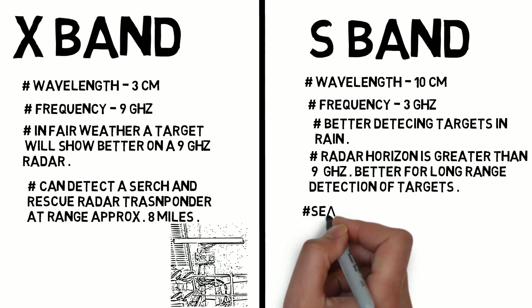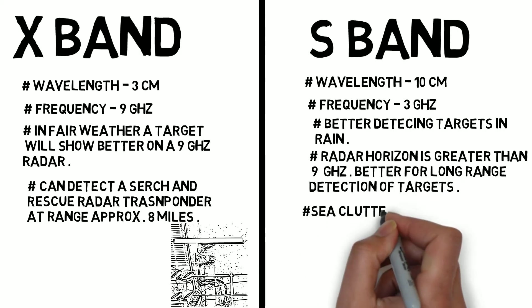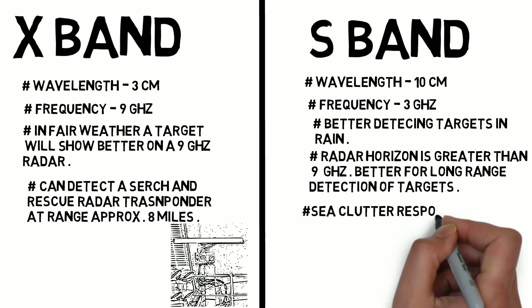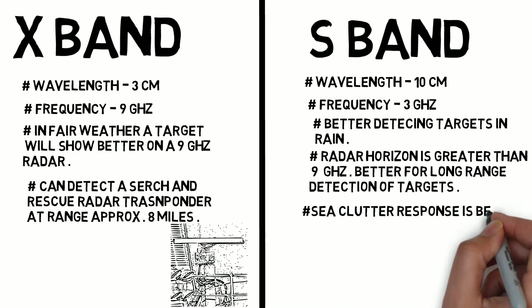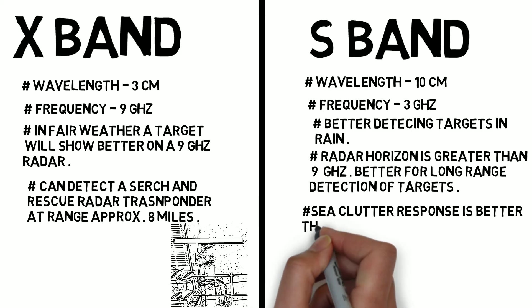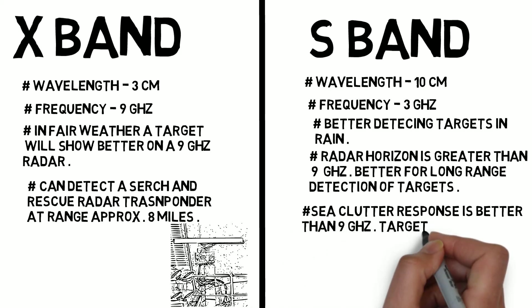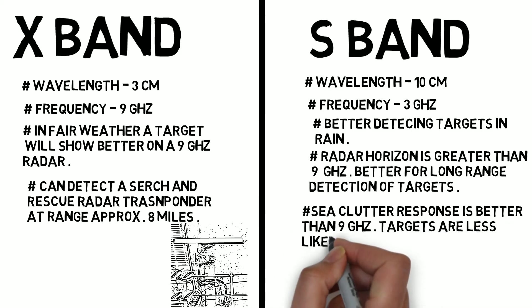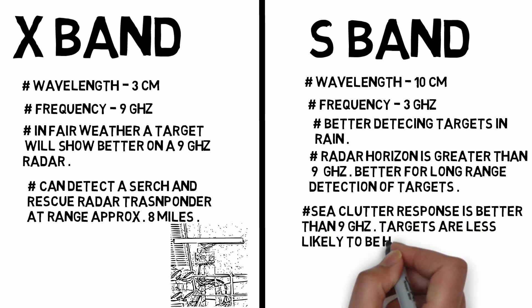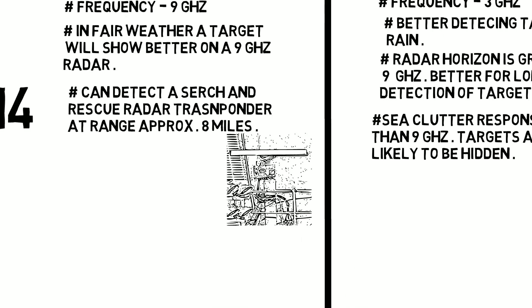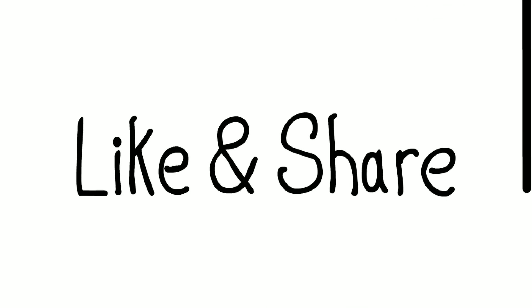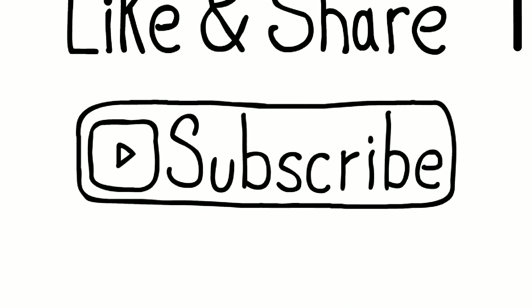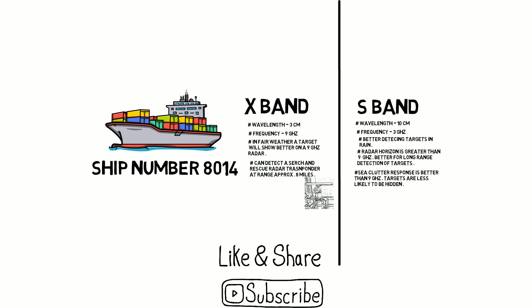In the S-band radar, the sea clutter response is better than the X-band, therefore targets are less likely to be hidden. This covers the basic difference between X-band radar and S-band radar. Hope you liked it, thank you.